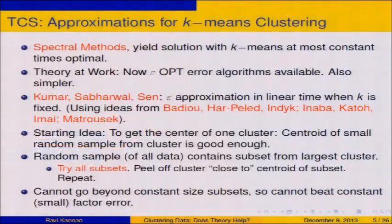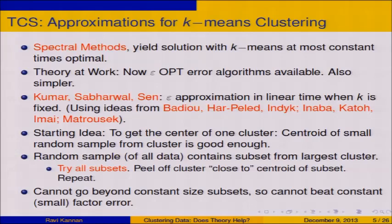This cannot go beyond constant size subsets because of the enumeration — with some calculations, you cannot beat a constant factor approximation. In other words, I cannot make this epsilon go to zero; the epsilon remains a small constant. We'll see that in a lot of practical examples, we need epsilon going to zero, so this creates a problem.